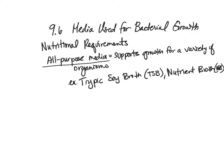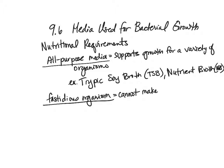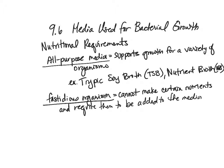For organisms that need a specific nutrient profile, we use the term fastidious organisms. A fastidious organism is one that cannot make certain nutrients and requires them to be added to the medium. So if we want to grow these organisms, we must make sure the medium contains those things it cannot make on its own. An all-purpose medium will not work for this purpose.